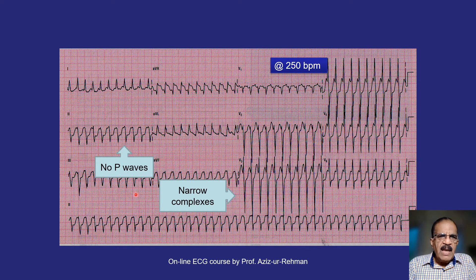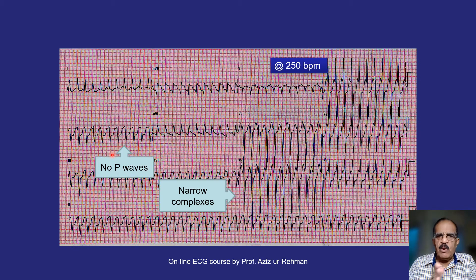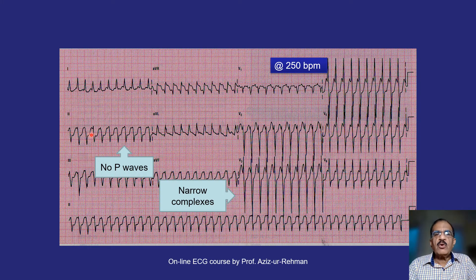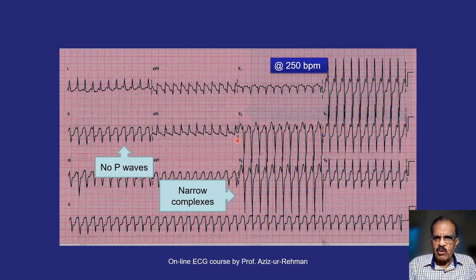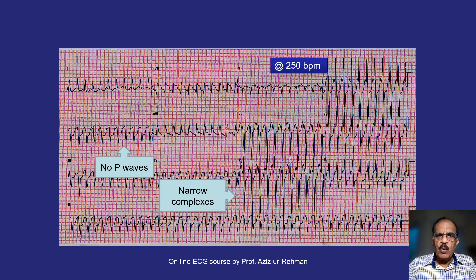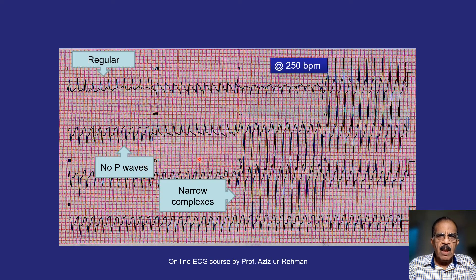The heart rate here is 250 beats per minute — 1500 divided by the number of small squares between two R waves gives 250. This is much faster than expected in sinus tachycardia. The QRS complexes are narrow, and — importantly — P waves are not visible. In SVT there is atrial depolarization, but since this is an AV nodal phenomenon, the atria depolarize at essentially the same time as the ventricles, so the P wave is merged into the QRS complex.